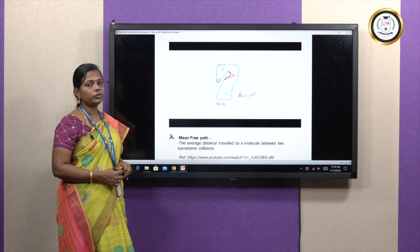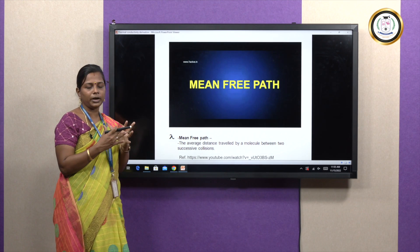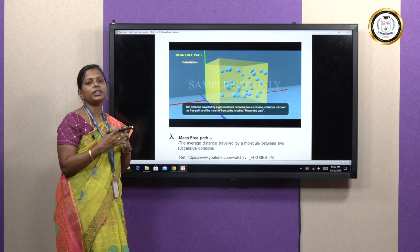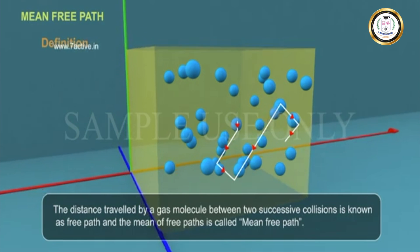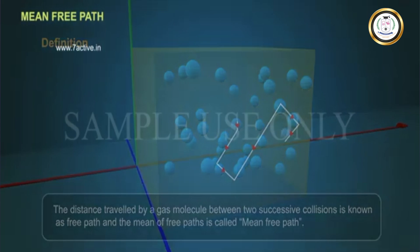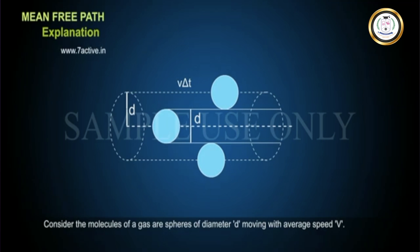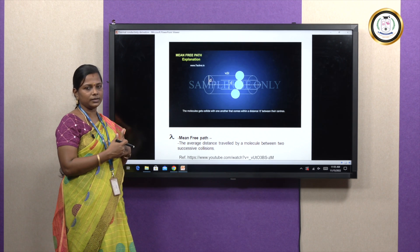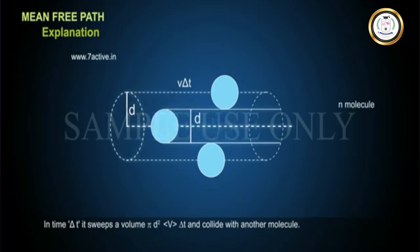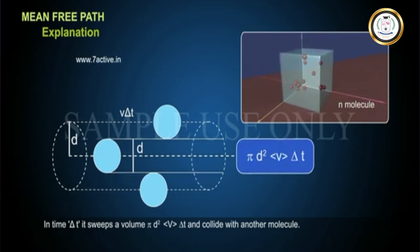When we heat the rod, all the molecules are bombarding — the electrons are colliding with each other. The distance travelled by an electron between two successive collisions is the mean free path. Due to external heat energy, molecules undergo bombardment, causing displacement. We are considering this from the point of view of electrons, where the electron moves due to collision — this distance is the mean free path.